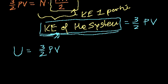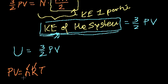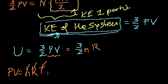We also know that PV = nRT from the ideal gas law, where n is the number of moles, R is the ideal gas constant, and T is temperature in Kelvin. Making that substitution, the internal energy can also be written as U = (3/2)nRT.